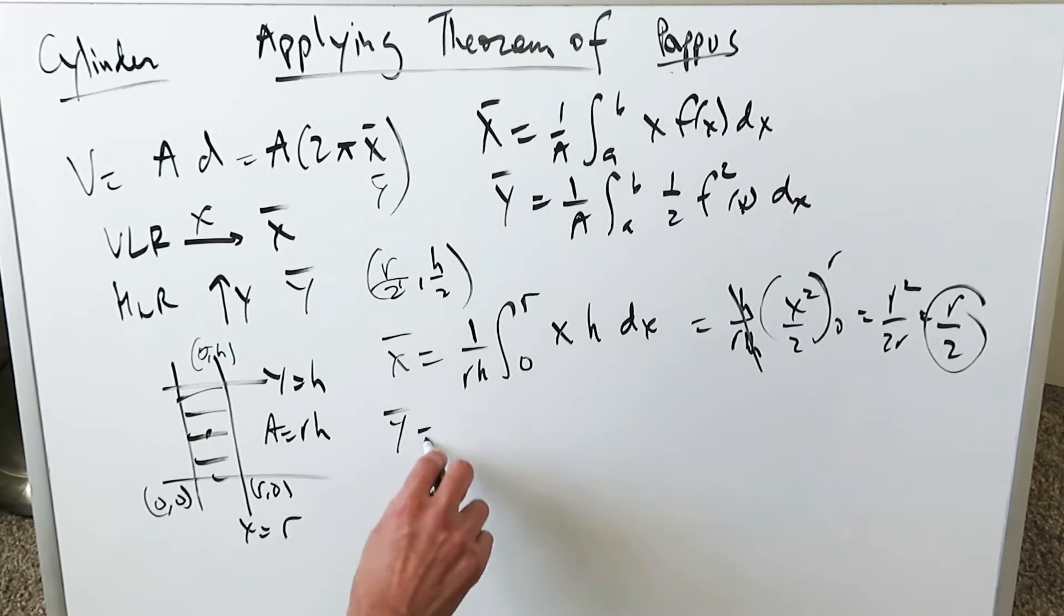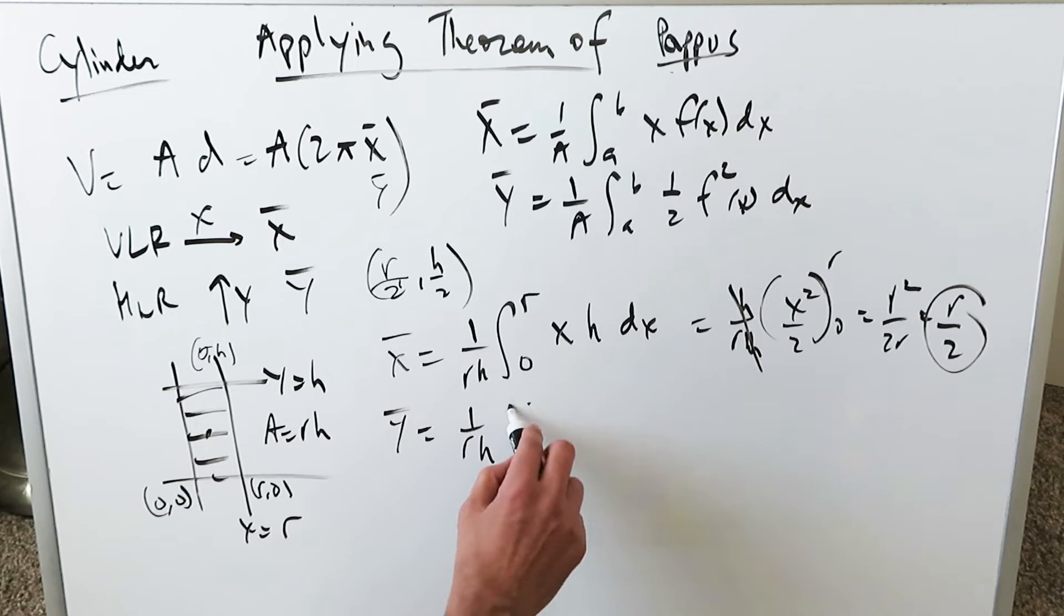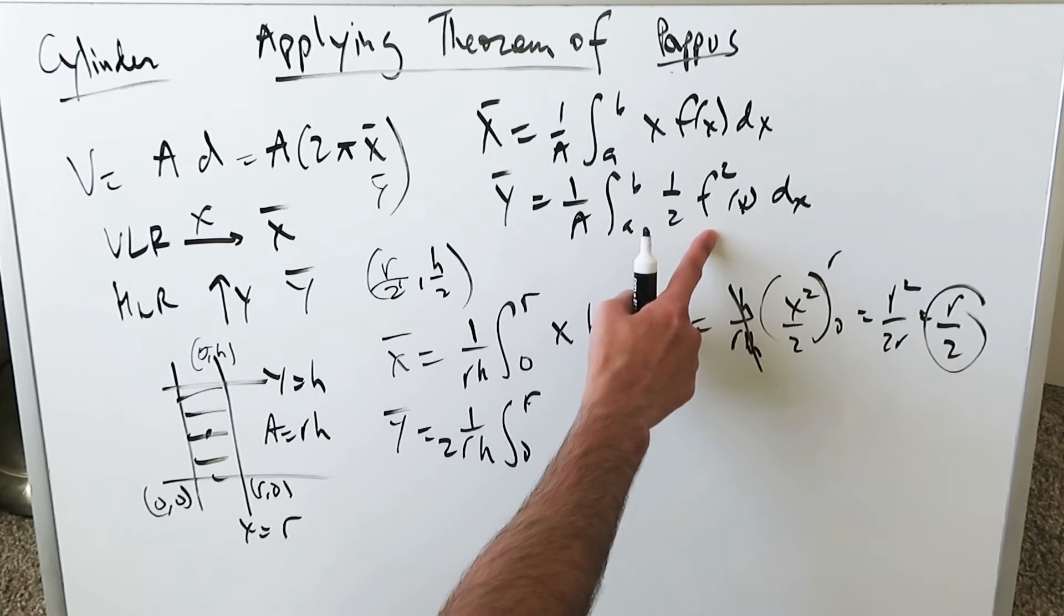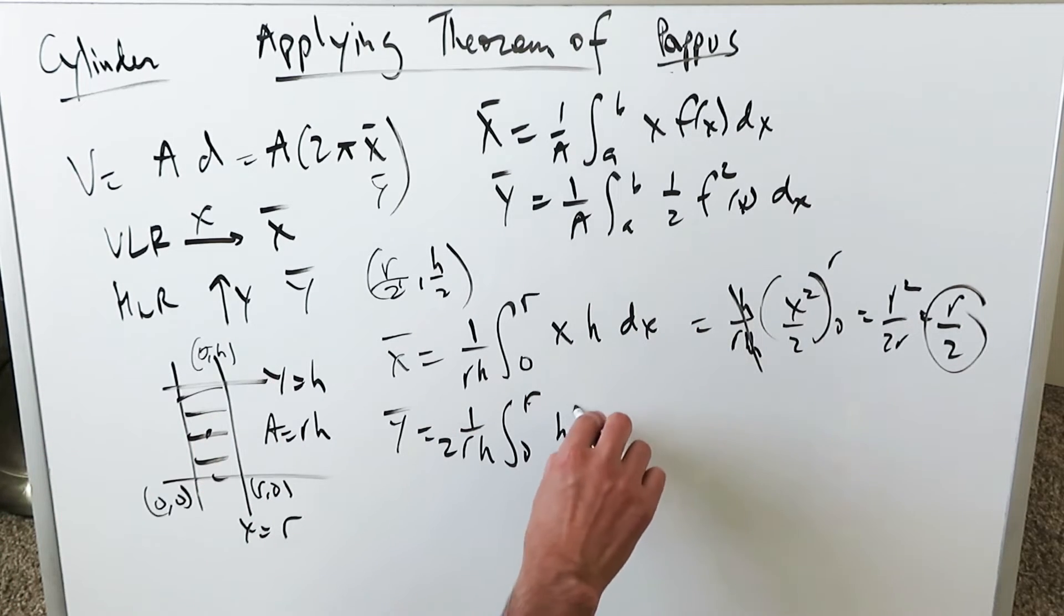If you want to look at the y value of the centroid it's again 1 over rh, rectangular region length times width rh. 0 to r, you have 1 over 2, you can make it 1 over 2rh. The function f of x squared, my function is h, h squared dx.